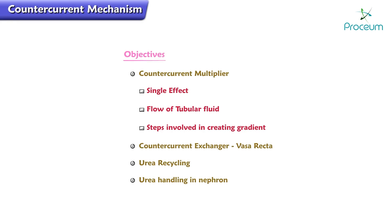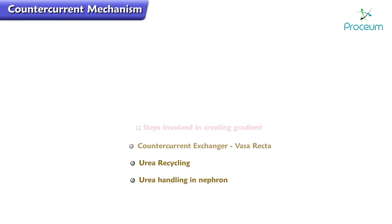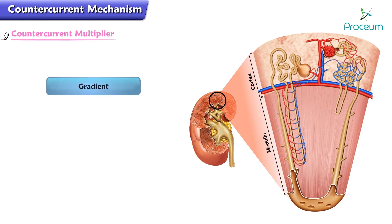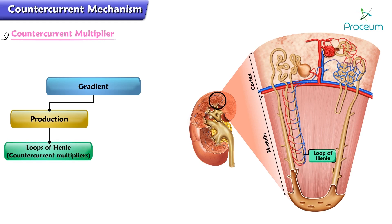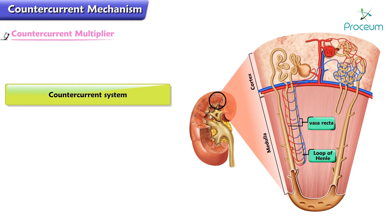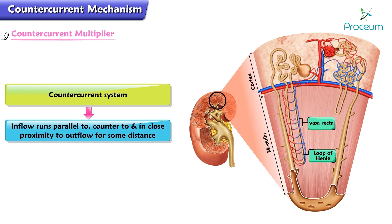Welcome to another video in renal physiology. In this section we're going to discuss the counter-current mechanisms. The concentrating mechanism depends on the maintenance of a gradient of increasing osmolality along the medullary pyramids. This gradient is produced by the operation of the loop of Henle as counter-current multipliers and maintained by the operation of the vasa recta as counter-current exchangers. A counter-current system is one in which the inflow runs parallel to, counter to, and in close proximity to the outflow for some distance.